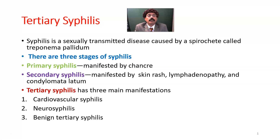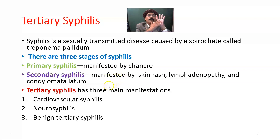What is syphilis? Syphilis is a sexually transmitted disease caused by a special type of bacteria, the spirochete Treponema pallidum. There are three stages of syphilis: primary syphilis, secondary syphilis, and tertiary syphilis. Primary syphilis is manifested by chancre that develops on the genitalia or in the oral cavity. Secondary syphilis is manifested by skin rash including the palm and the sole, lymphadenopathy, and condylomata latum — that is the area of hypopigmented and pigmented skin around the genitalia and also around the oral cavity.